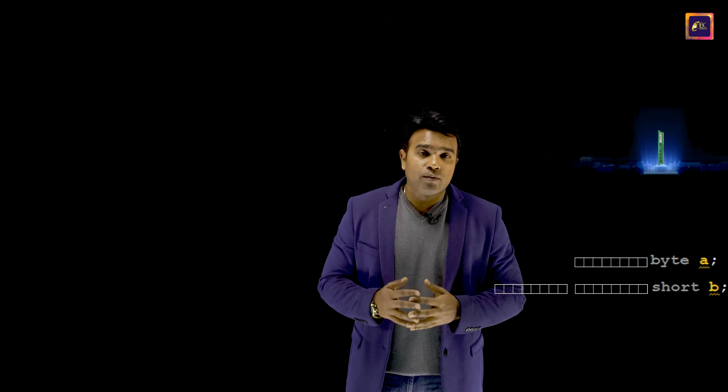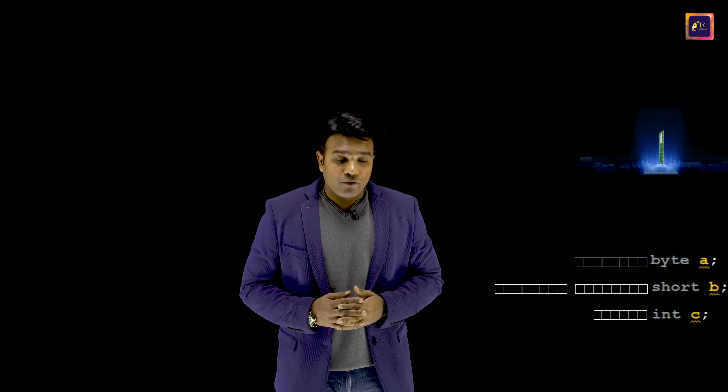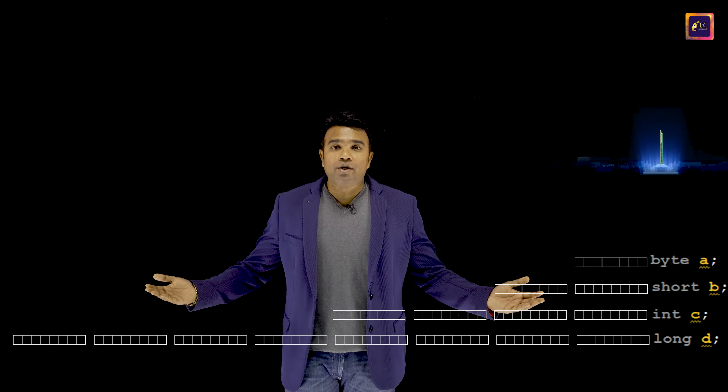If you ask how to reserve those bytes for our usage in programming, that is the actual purpose of data types. For example, in Java, to store integers, we have 4 data types. If you declare a variable as of byte type, then 1 byte would be reserved. If you declare the variable as of type short, then 2 bytes would be reserved. If you declare it as of type int, then 4 bytes would be reserved. And if you declare it as of type long, then 8 bytes would be reserved.